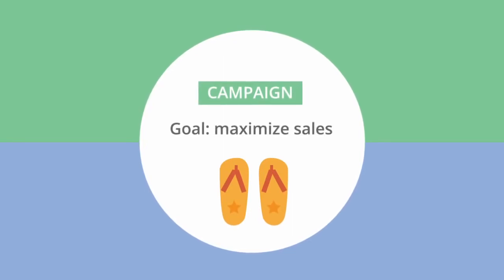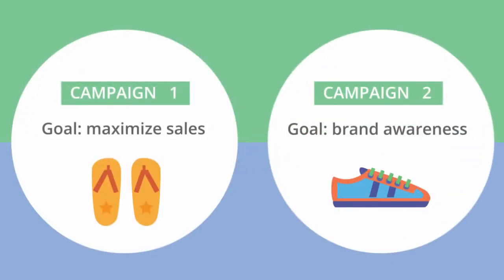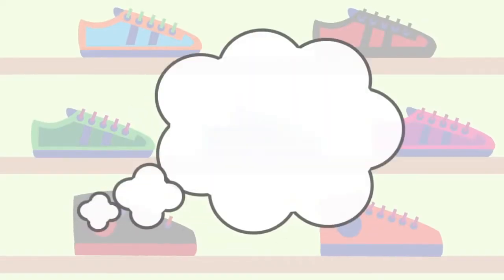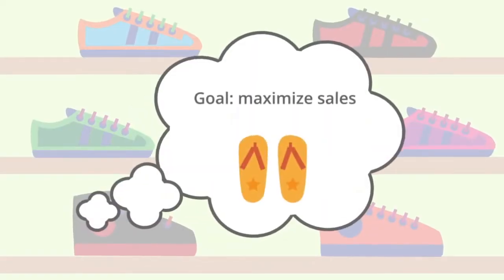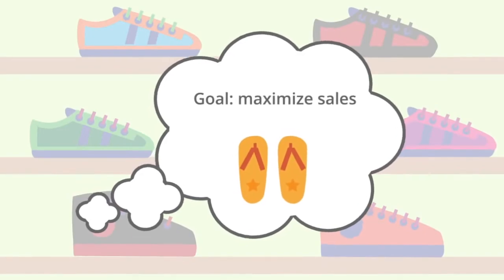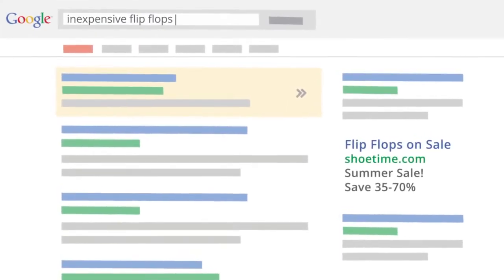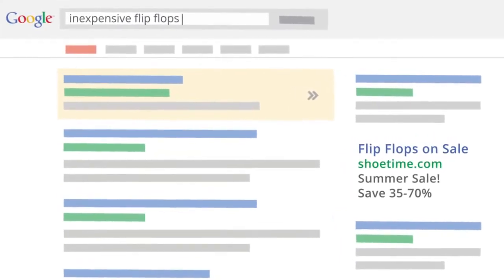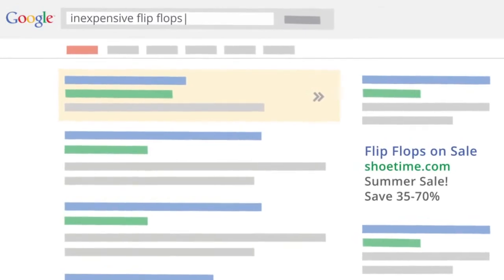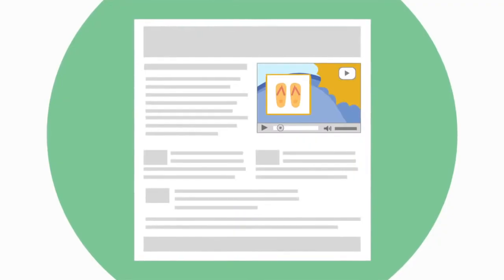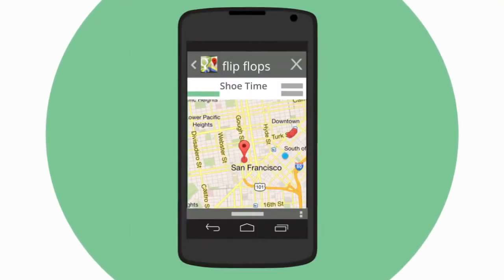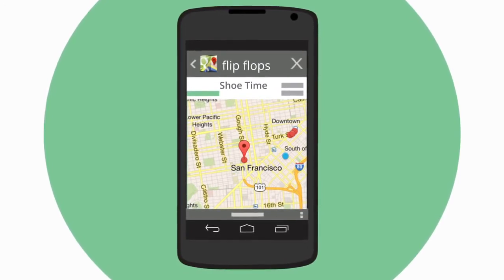If you're having trouble picking just one goal, consider creating two campaigns, each with its own specific goal and separate budget. Having a clear goal helps you determine what kinds of ads you want to create. AdWords gives you lots of options, from text ads that show up beside Google search results, to video ads on popular websites, to location-based ads that show on the mobile phones of shoppers near your store.